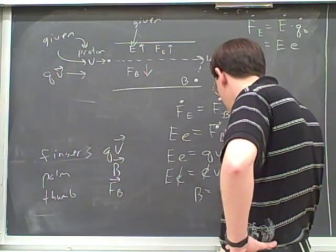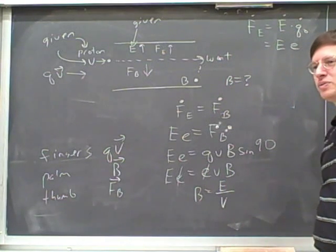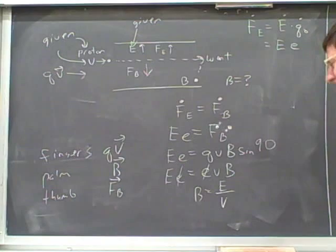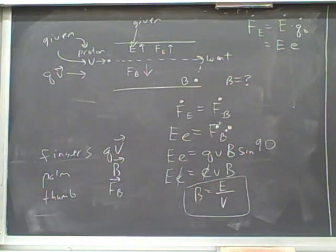Again, this does look a lot like the formula E equals cB, but I think that's just a coincidence. Maybe I'm missing something here. Alright. This is a very typical type of exam question to have to work through here. And this is done a lot in labs. Again, balancing electric and magnetic fields to determine properties of the particles that you're looking at.